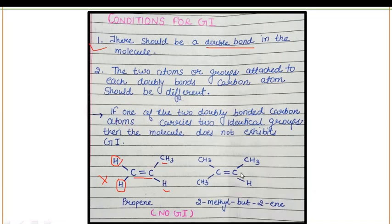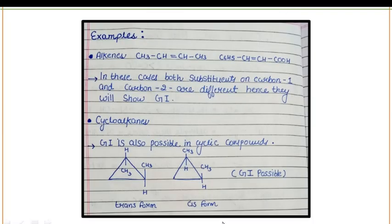In another example, condition one is fulfilled — a double bond is present — but condition two is not fulfilled because carbon one has two identical groups, CH₃, attached. That's why there will be no geometrical isomerism. For alkenes where substituents on carbon one and carbon two are all different, both conditions are met and they will show geometrical isomerism.